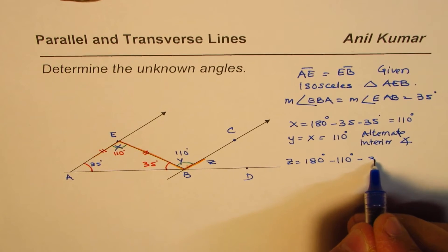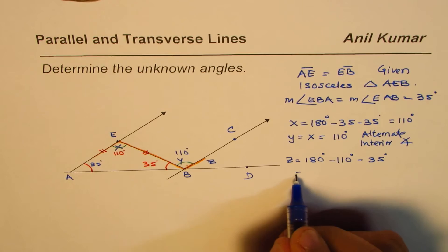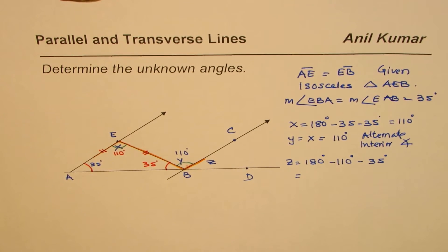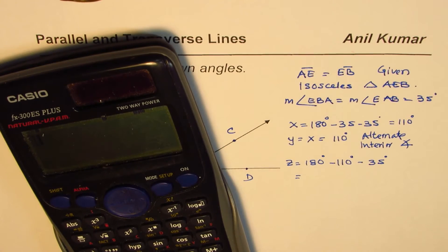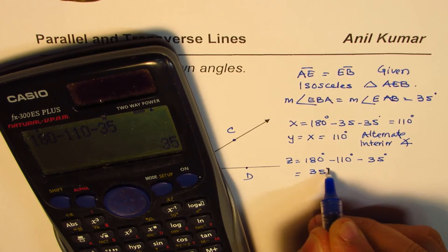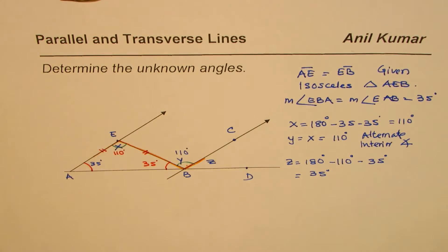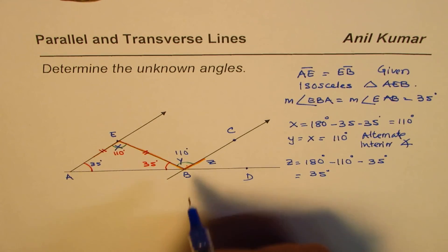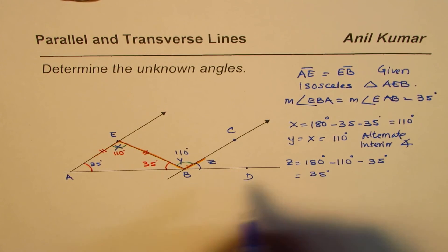So at times you can also use calculator. Let's do it. 180, take away 110, take away 35 equals to, that is also 35 degrees in this particular case. So we get z as 35 degrees.